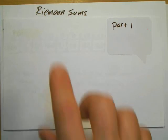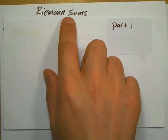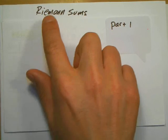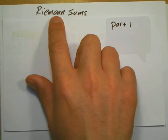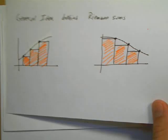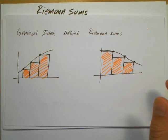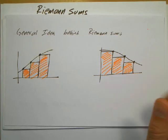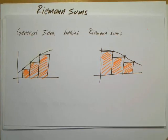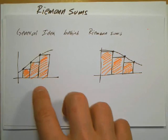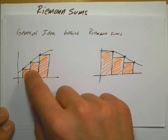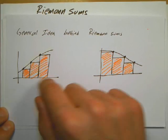This is part one of Riemann's Sum. Riemann was a mathematician that developed this type of approximation for integrals. The general idea is that if you don't know what the function is, or if you can't find an anti-derivative, you're going to approximate the exact area by putting rectangles either inside or outside of the curve.